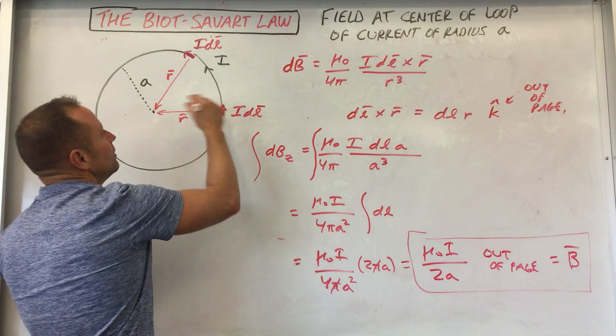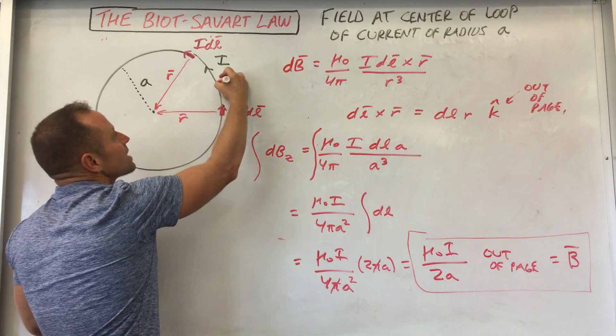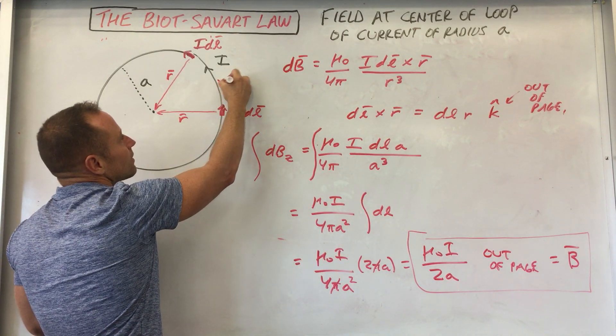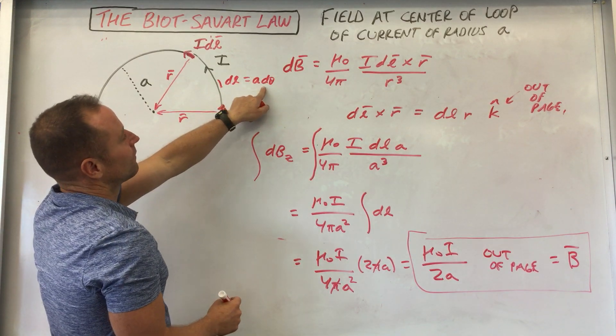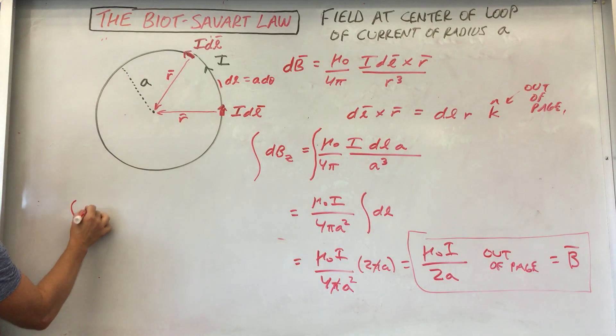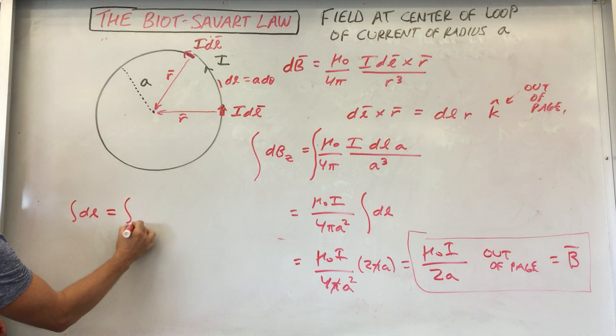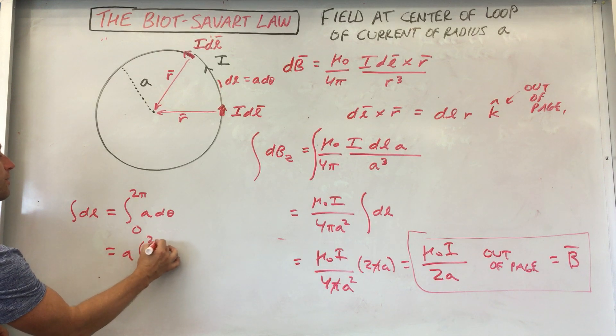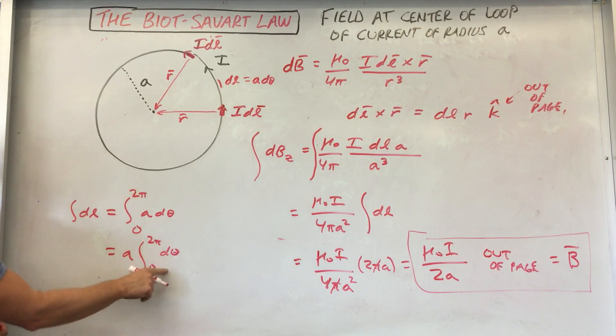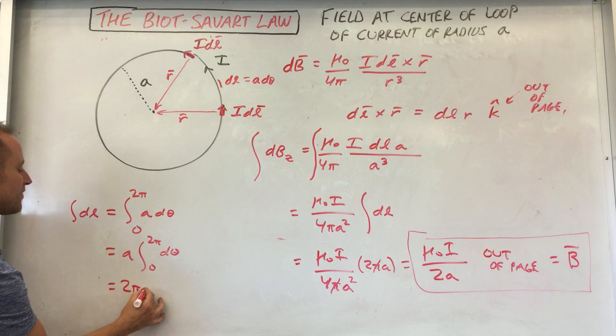I guess sometimes people, when they're new to this, what they'll do is they'll say that little bit of length here would be like a d theta. And then they'll integrate, so they'll say the integral of dL, that's really the integral from zero to two pi of a d theta, which is a times integral from zero to two pi d theta. Well, so that's just going to integrate to theta evaluated at two pi minus zero. So two pi A. So you just get the circumference.